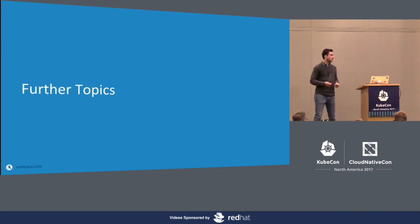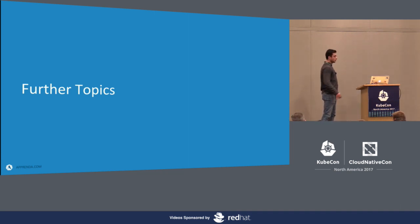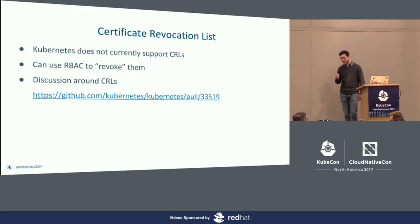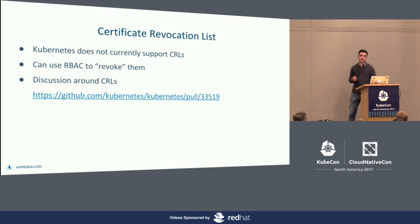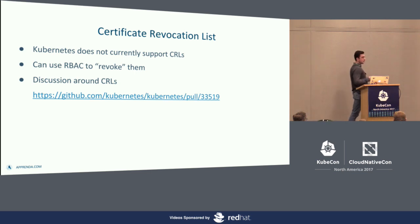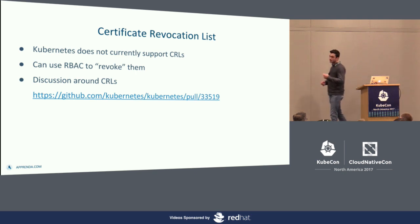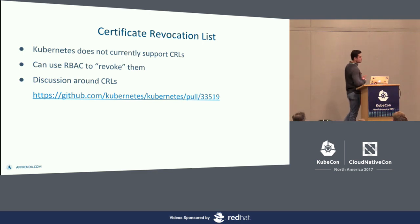That's basically how we create a secure Kubernetes cluster deployment and how certificates are used at the Kubernetes component layer. But certificates are also used for different things on the cluster once you have it running. One thing that's currently missing is the ability to revoke certificates using certificate revocation lists. If you're using certs for user auth, you currently cannot revoke certificates — they're always going to be considered valid until they actually expire. If you want to learn more or join the discussion about this feature, check out the linked issue on GitHub.